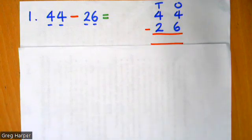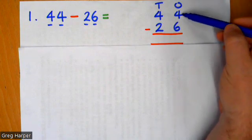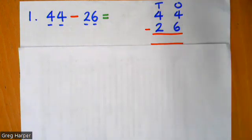So to start with, we are going to start as always with the smallest place value column, the ones, and our first sum is four take away six. However, we can't do this. So we need to exchange.